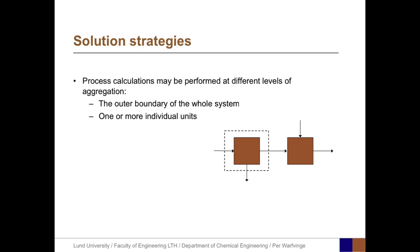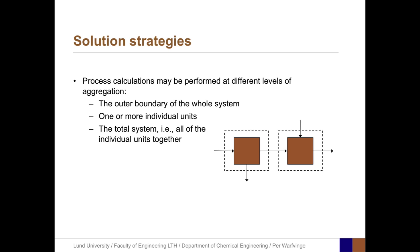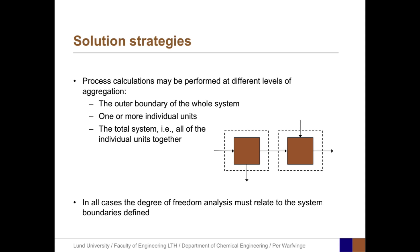Another possibility is to focus on one or more individual units. Another approach — and that is actually the one we are going to apply most of the time — is to view the total system, meaning all of the individual units together. In all cases, the degree of freedom analysis must relate to the system boundaries that have been defined, because we can only set up mass balances involving fluxes that cross system boundaries.